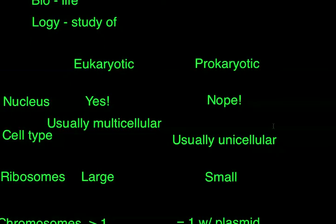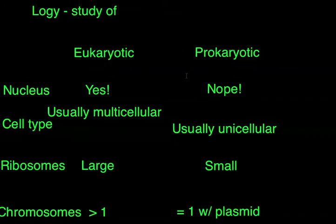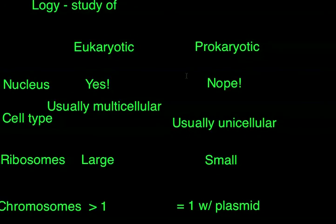When you think about it, there are three different domains of life in microbiology: eukaryotic, prokaryotic, and archaea. It's important that we understand this because when we talk about something like bacteria, we have to understand it's a prokaryotic organism — it doesn't have a nucleus, it's usually unicellular, and has small ribosomes. All of that matters in diagnostic medicine. But you still do run into eukaryotic organisms that have a negative effect on the body. Let's look at the differences between eukaryotic and prokaryotic organisms.